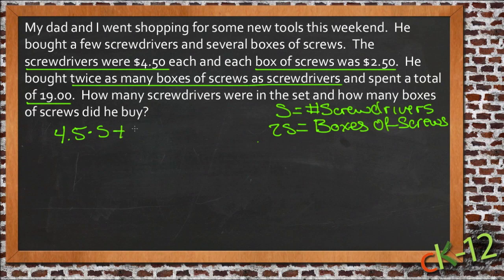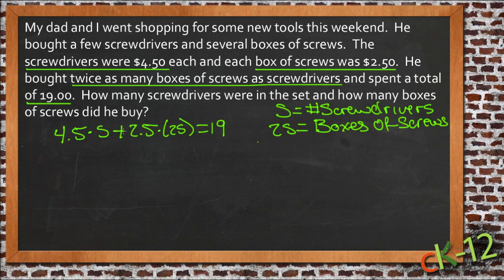We can say that 4.5 times s plus 2.5 times 2s should equal 19. That gives us $4.50 multiplied by the number of screwdrivers, added to $2.50 multiplied by twice the number of screwdrivers — because the number of boxes of screws equals twice the number of screwdrivers purchased. So that equals $19.